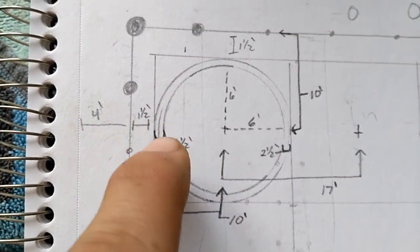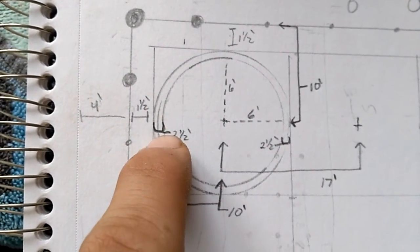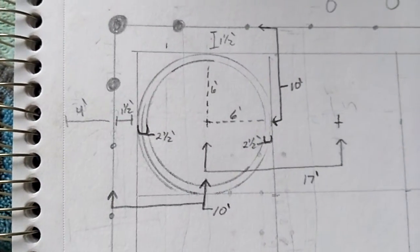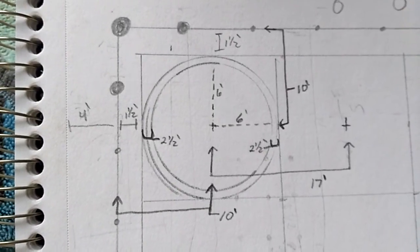Then you figure an additional two and a half foot perimeter past that circle so the birds can't physically reach each other if they stretch out past their cord.